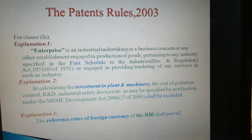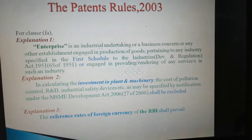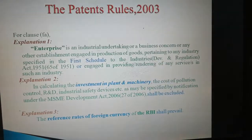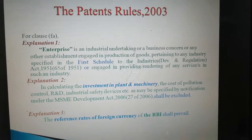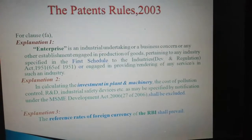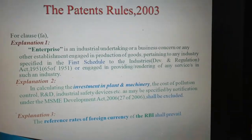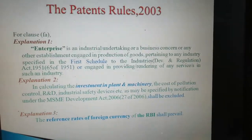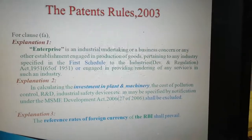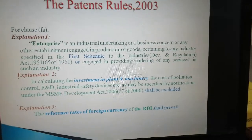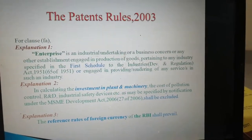Explanation 1 says: 'Enterprise' is an industrial undertaking or a business concern or any other establishment engaged in the production of goods pertaining to any industry specified in the first schedule to the Industries Development and Regulation Act 1951, or engaged in providing or rendering of any services in such an industry. Explanation 2 says: in calculating the investment in plant and machinery, the cost of pollution control, R&D (research and development), industrial safety devices, etc., as may be specified by notification under the MSME Development Act 2006, shall be excluded. Explanation 3 says: the reference rates of foreign currency of the RBI (Reserve Bank of India) shall prevail.